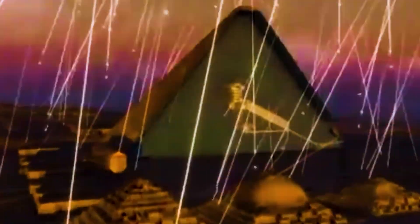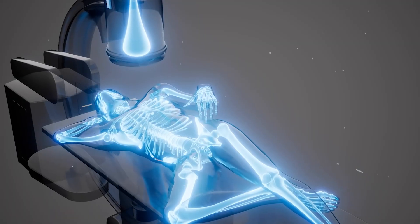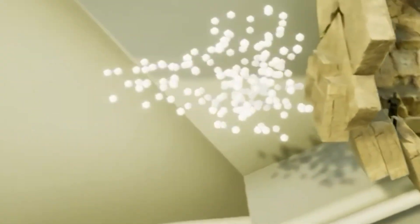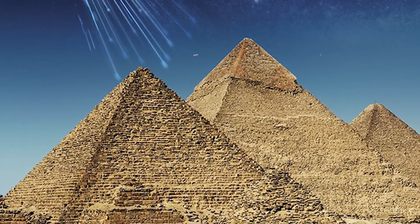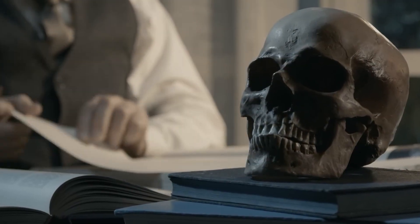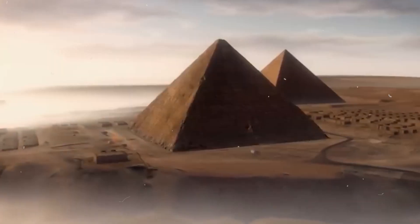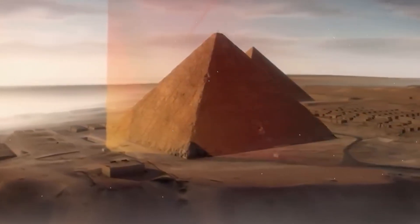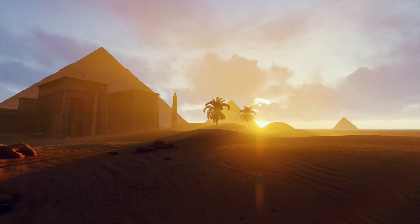In recent years, technology has helped us learn even more. Tools like 3D scanning, satellite imaging, and chemical analysis have provided new insights. For example, scans of the Great Pyramid have revealed hidden chambers, possibly storage areas, or parts of the structure designed to reduce pressure.